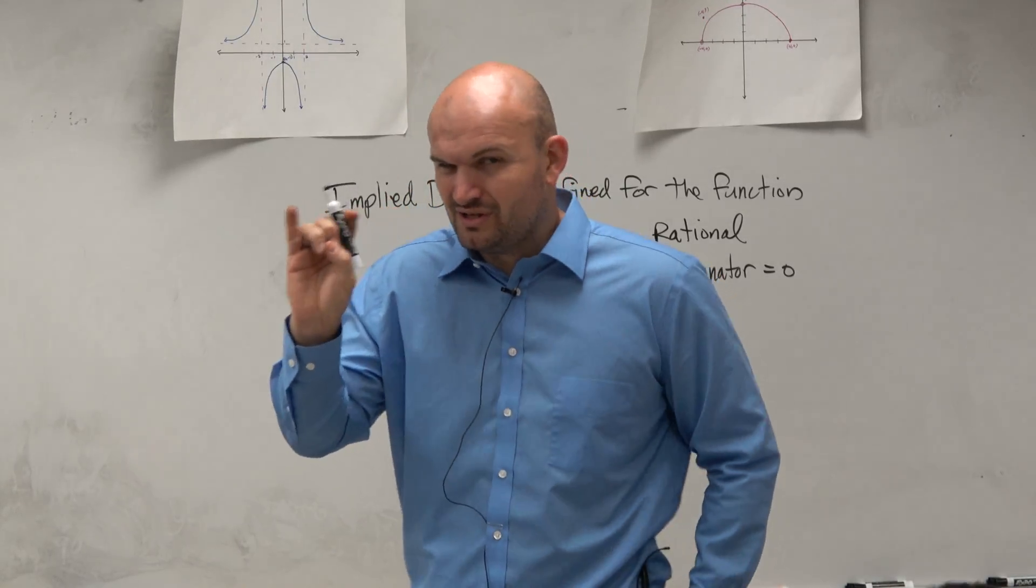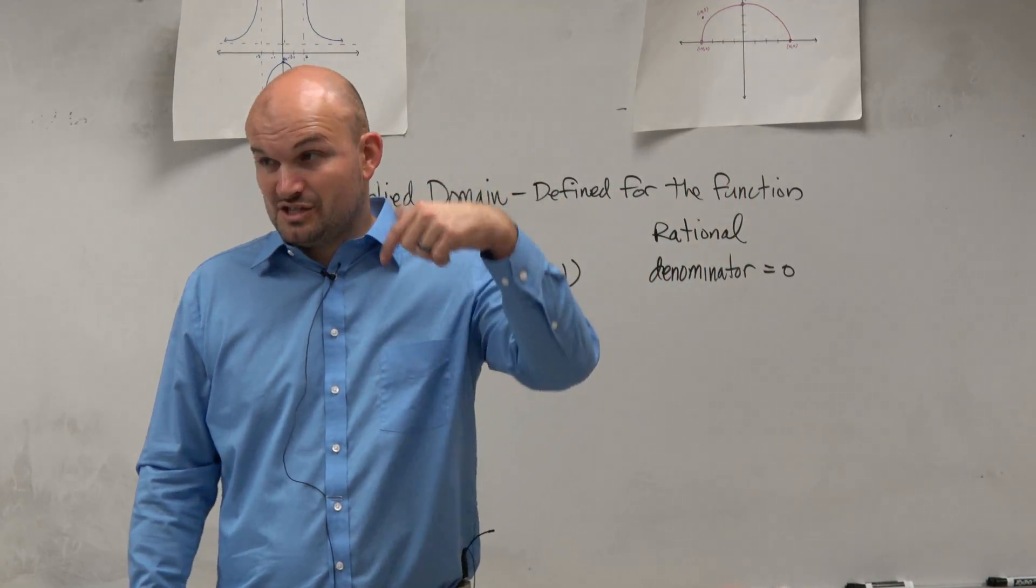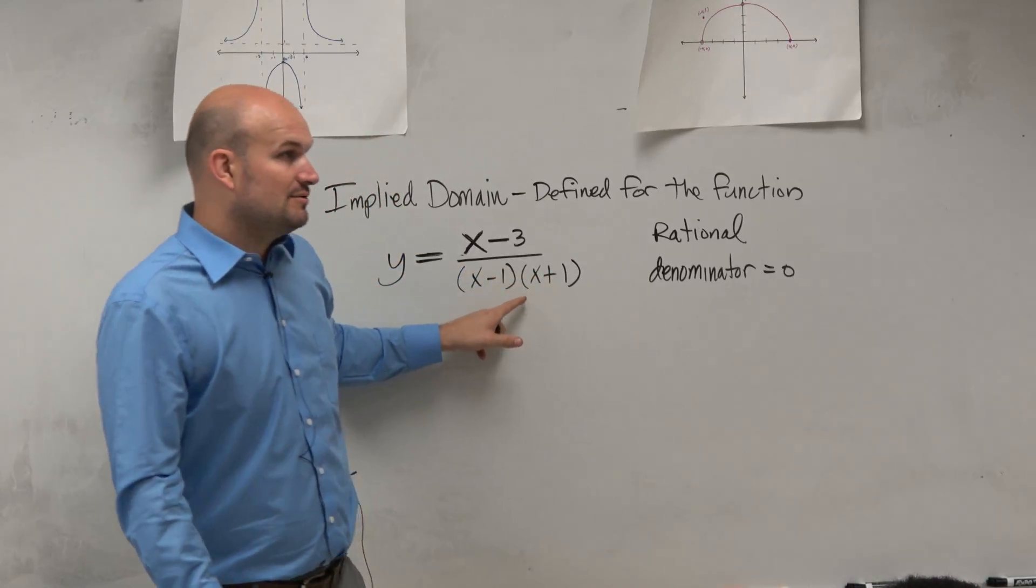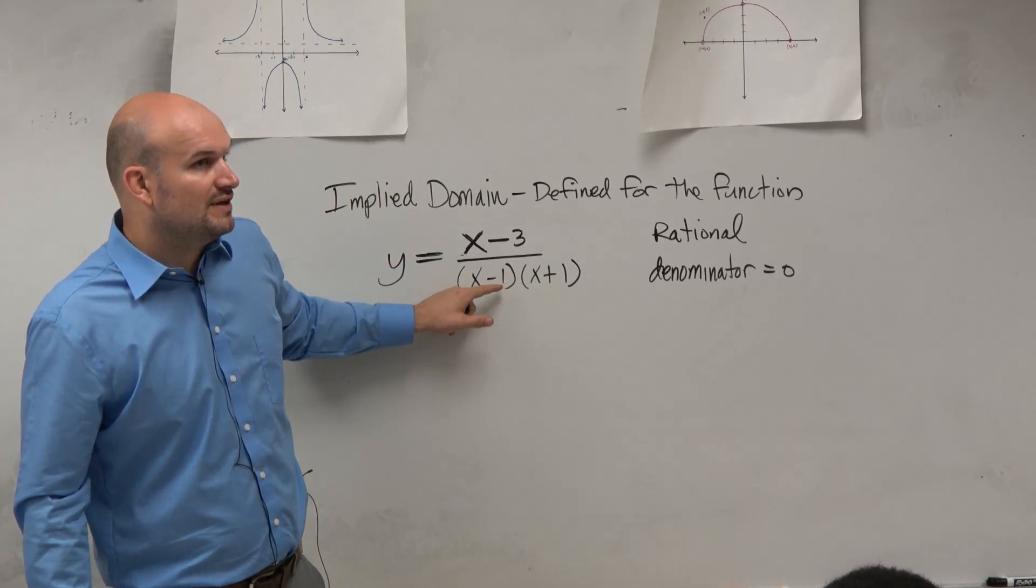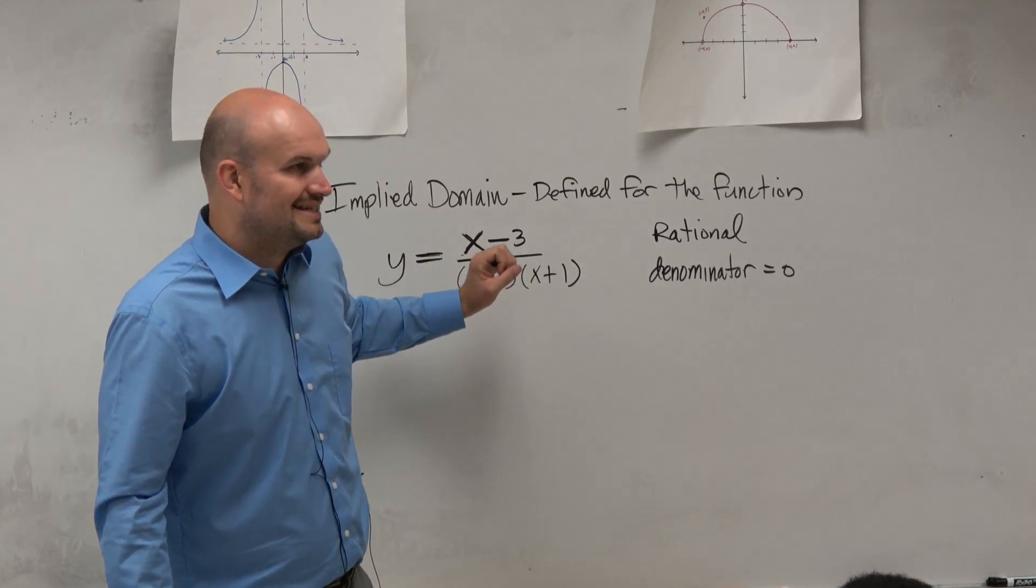And again, but it's very important, there's a difference though. When you're solving with the radical, that's telling you all the values that are in the domain, right? When you solve here, when you solve this, that's telling you all the values that are not in the domain.